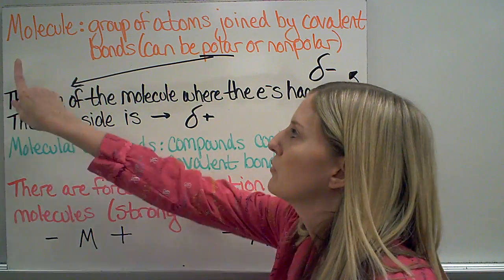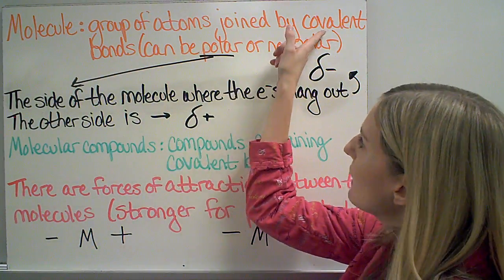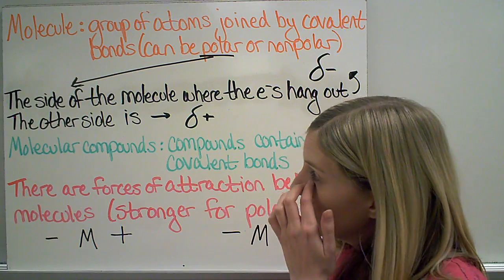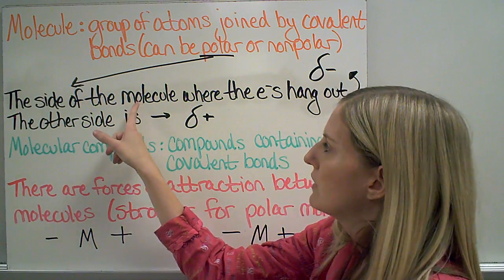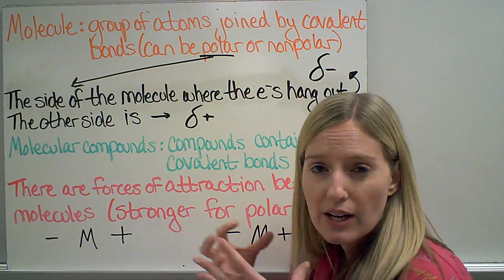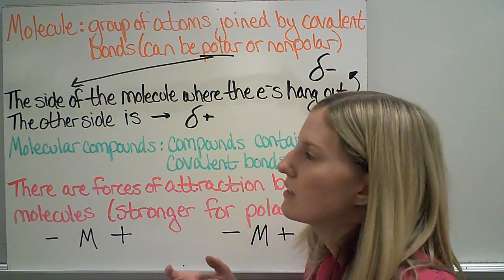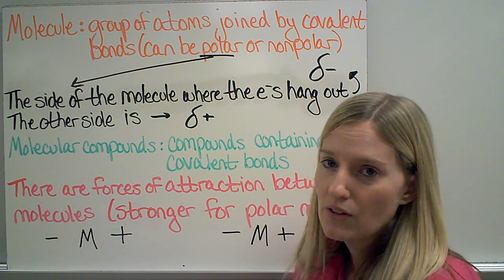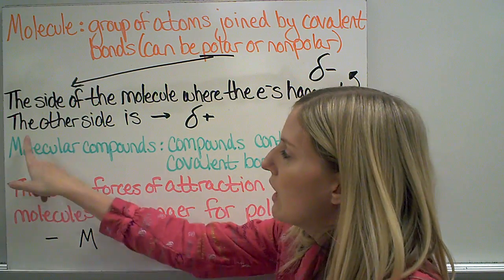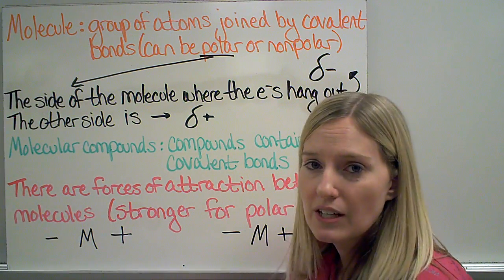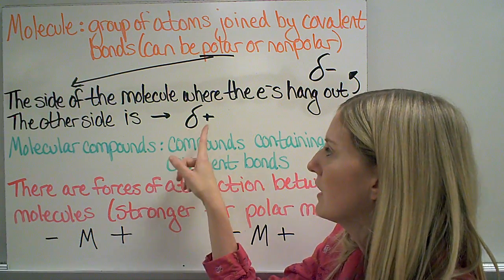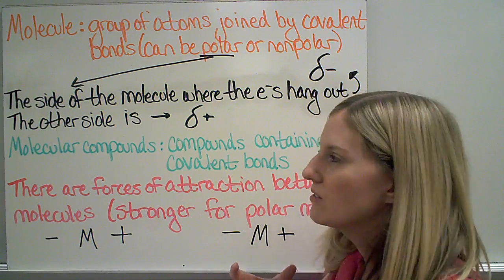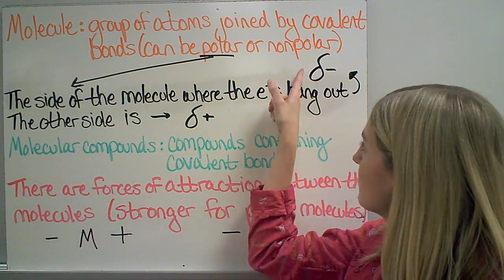A molecule is a group of atoms that are joined by covalent bonds, and molecules can either be polar or nonpolar. In a polar molecule, one side of the molecule has the electrons more concentrated there — it's hogging the electrons — so that side ends up being partially negative. The other side of the molecule does not have the electrons by it, so it ends up being slightly positive. That makes sense, because electrons have a negative charge, so wherever they're concentrated, that side is going to be slightly negative.